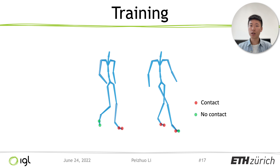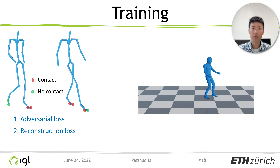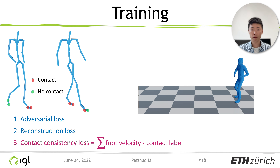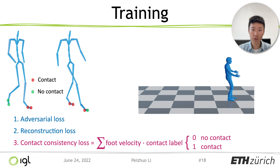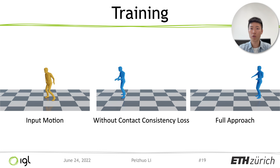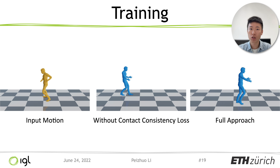However, the correlation between contact labels and animation is only learned implicitly by the discriminator, and it's not enough. As can be seen in this example, fixing foot sliding with inconsistent contact labels causes very unnatural sudden changes. We therefore introduce a contact consistency loss to enforce the generated foot velocity to be close to zero when the predicted contact label is enabled — where one stands for contact and zero for no contact. This helps avoid sudden change artifacts and greatly increases the perceptual quality of our results.